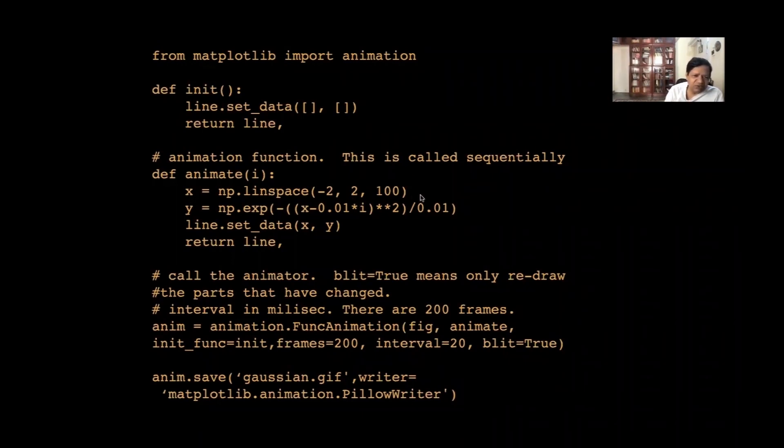So, my x is from minus 2 to 2 with 100 points. Why is that x minus 0.01 star i squared? Okay. I choose my standard deviation as b is 1. Right. So, b is 0.1.